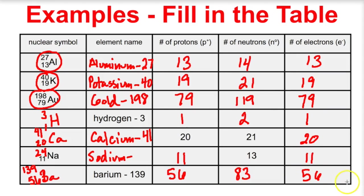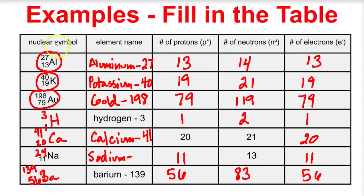Those are nuclear symbols in a nutshell — that's how you figure out how many protons, neutrons, and electrons are in an atom based on its nuclear symbol. If you like what you see, go ahead and click that little bomb in the bottom right-hand corner, and feel free to leave any comments or questions below. I hope you found this helpful.